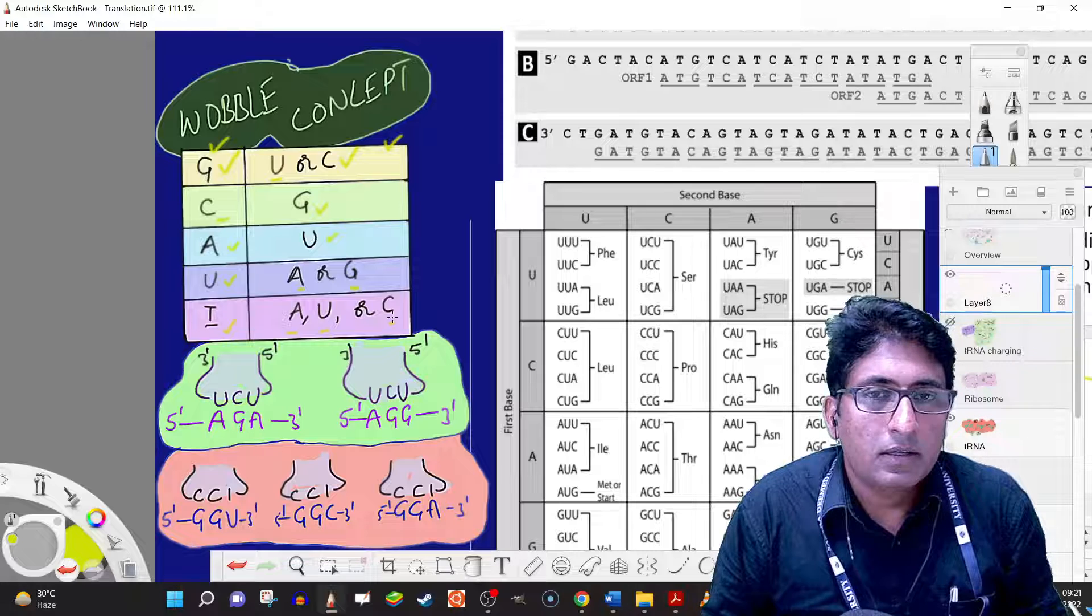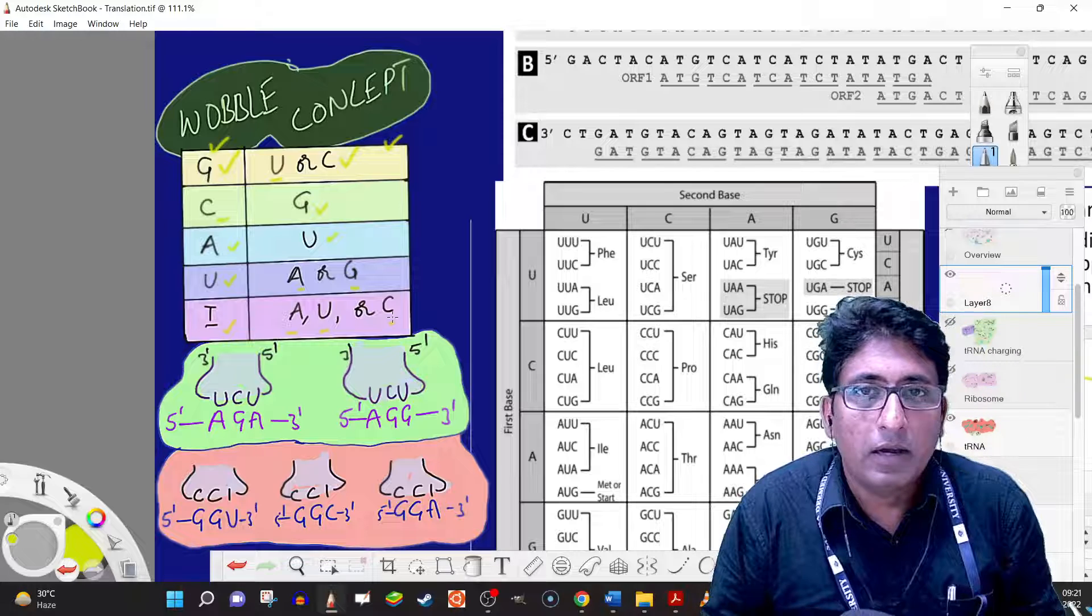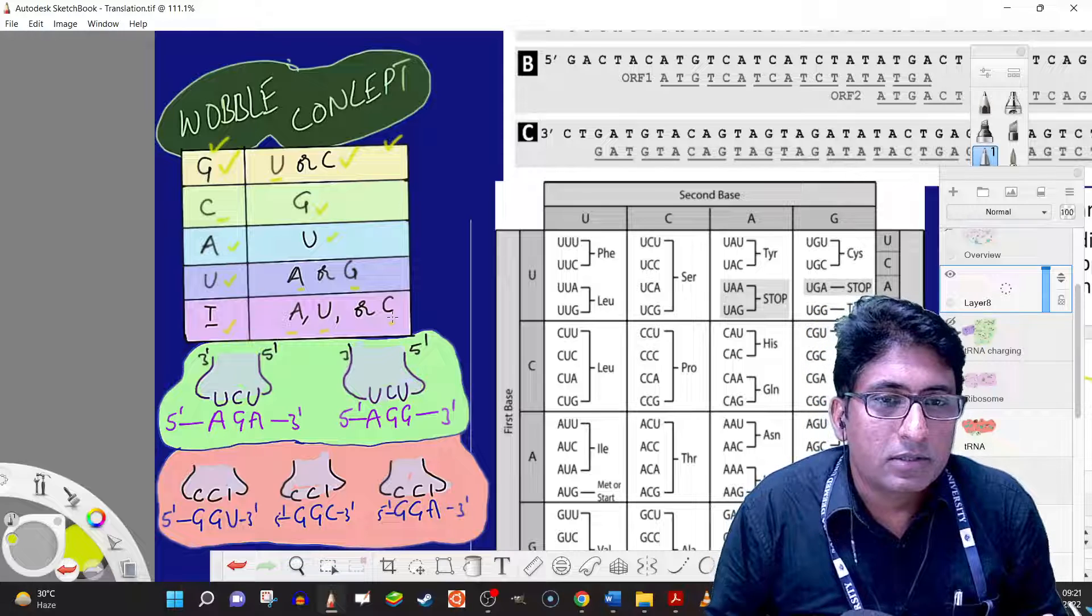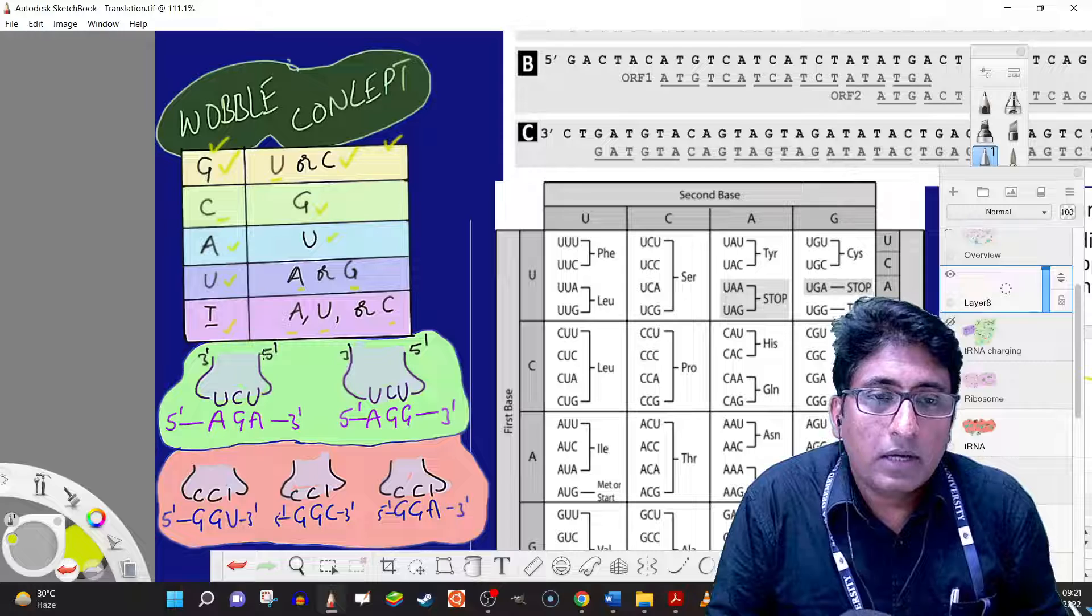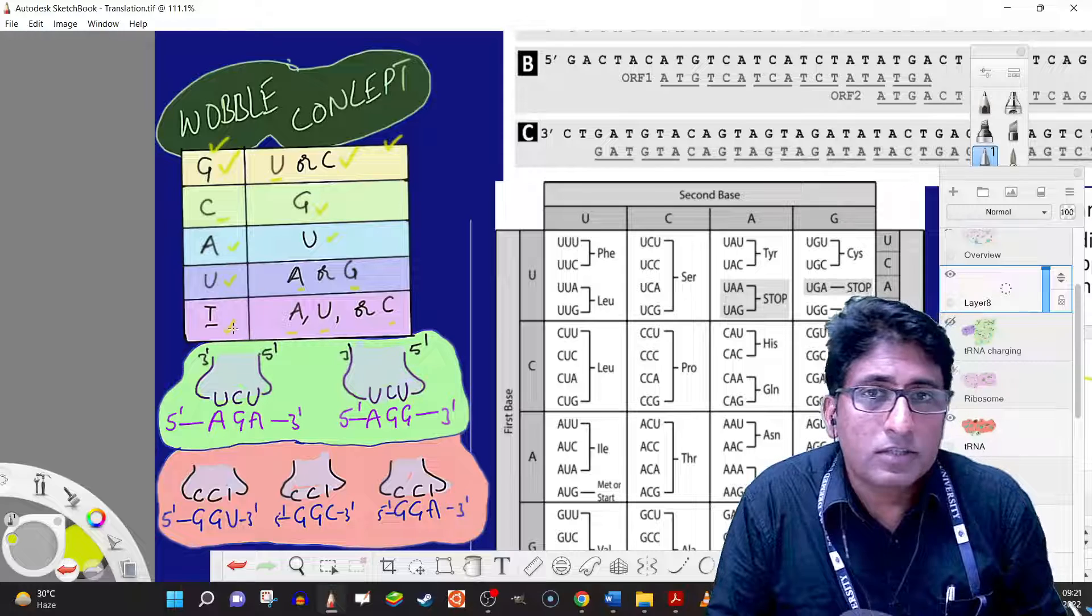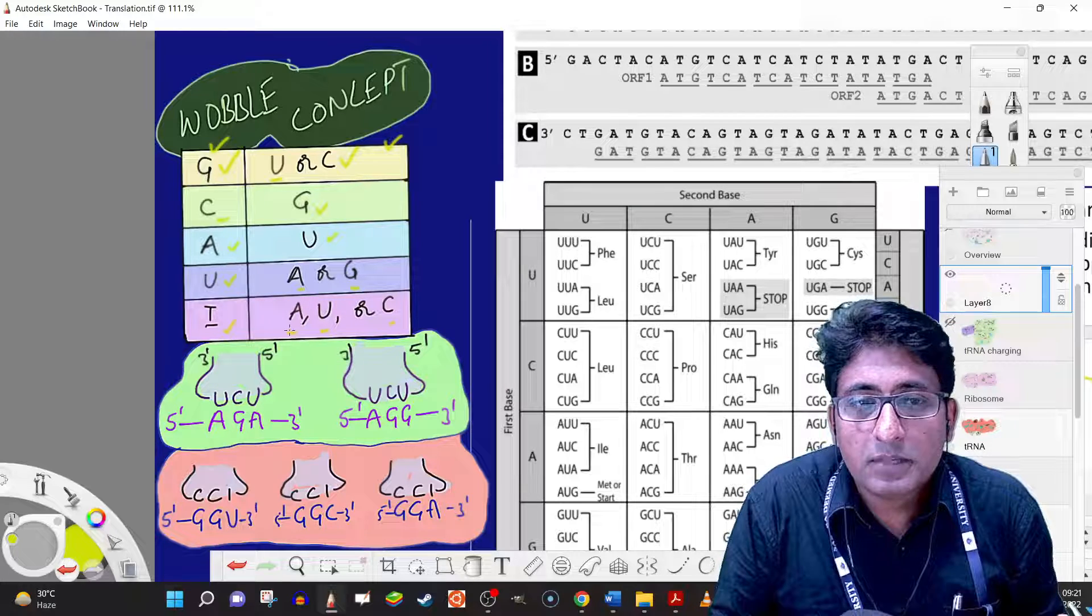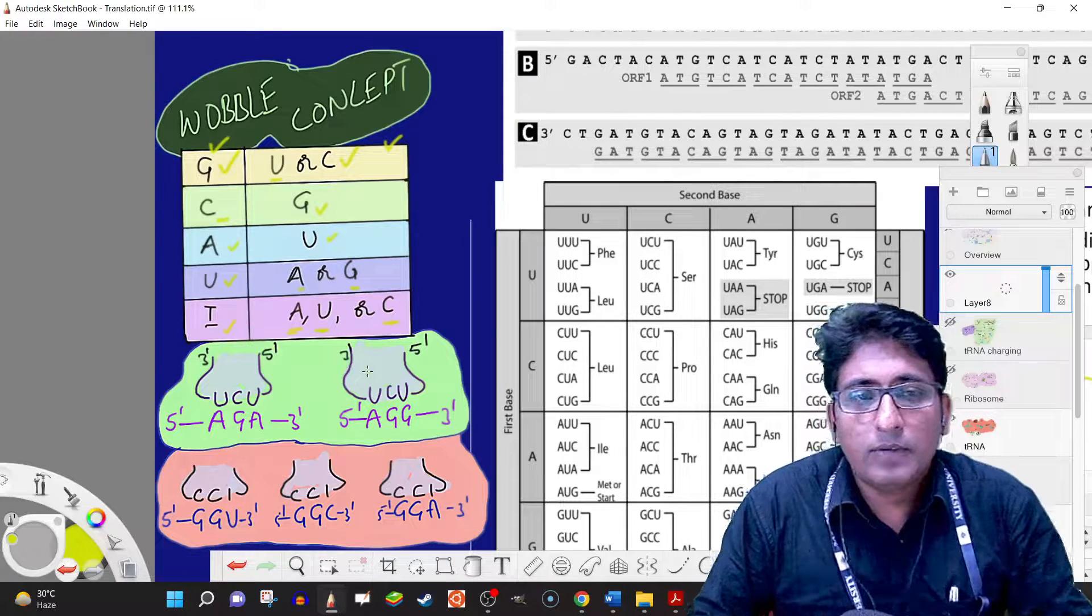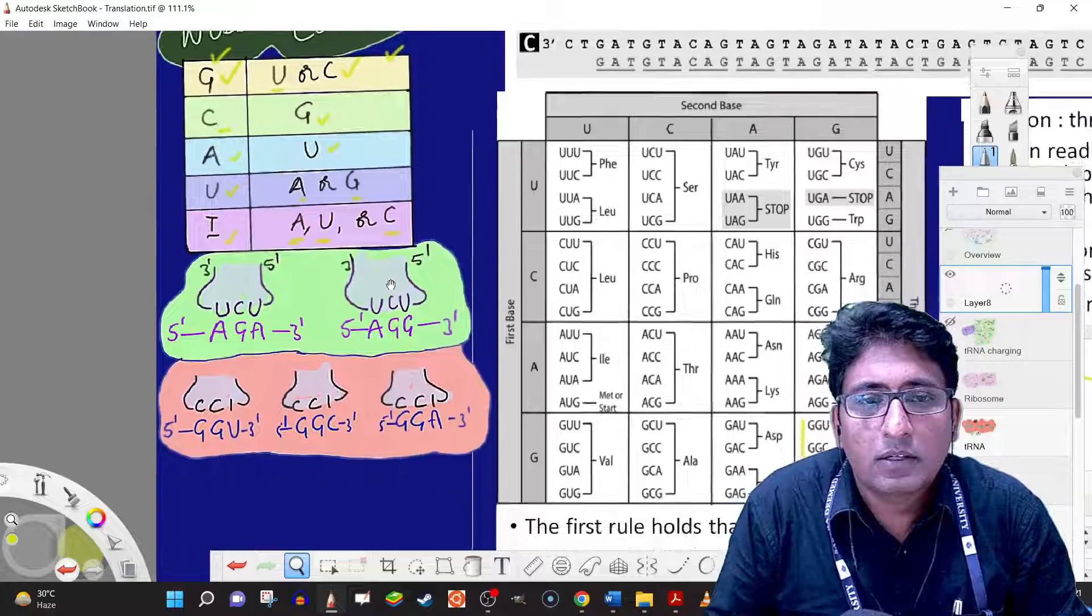Inosine is not a normal base expected in DNA or RNA, but it can be made by editing of the tRNA. Inosine is a kind of precursor for the purines, and if present, it can base pair with A, U, or C.